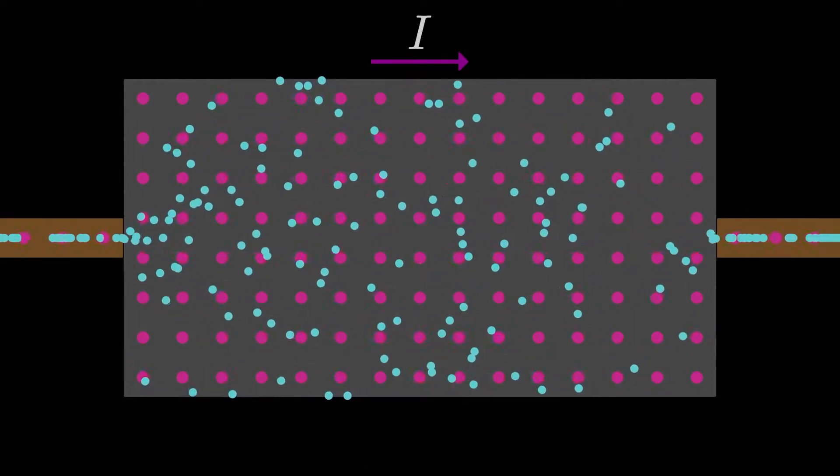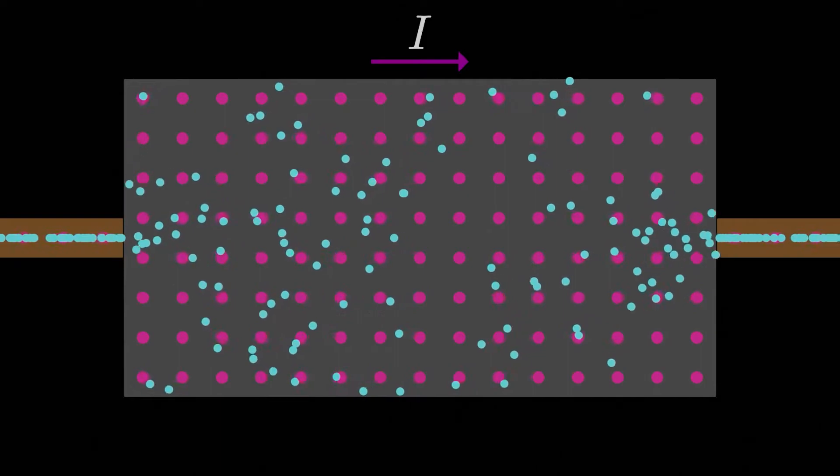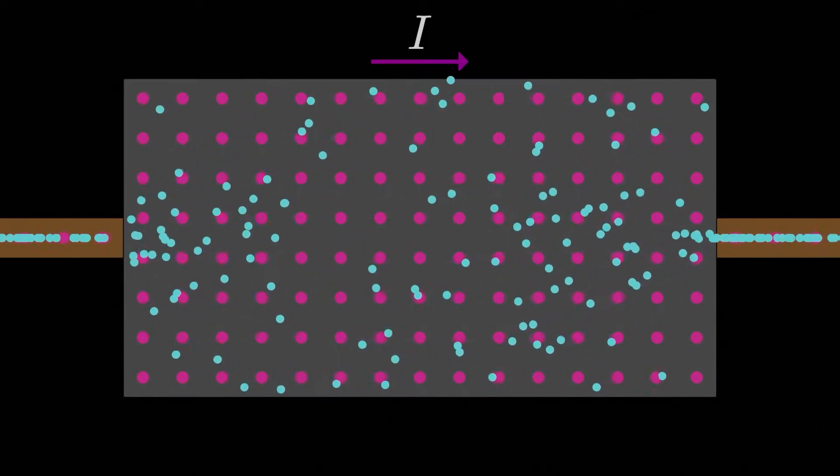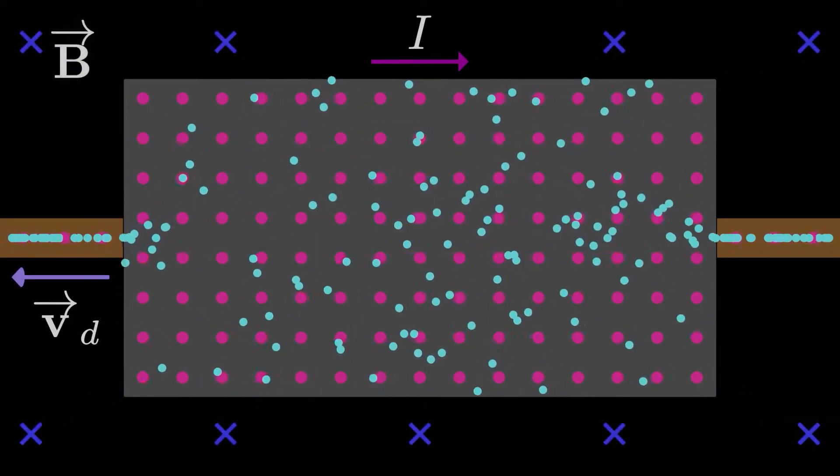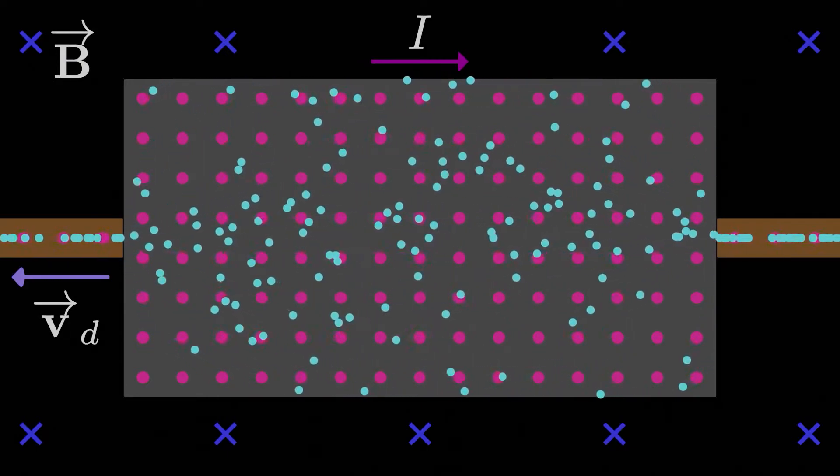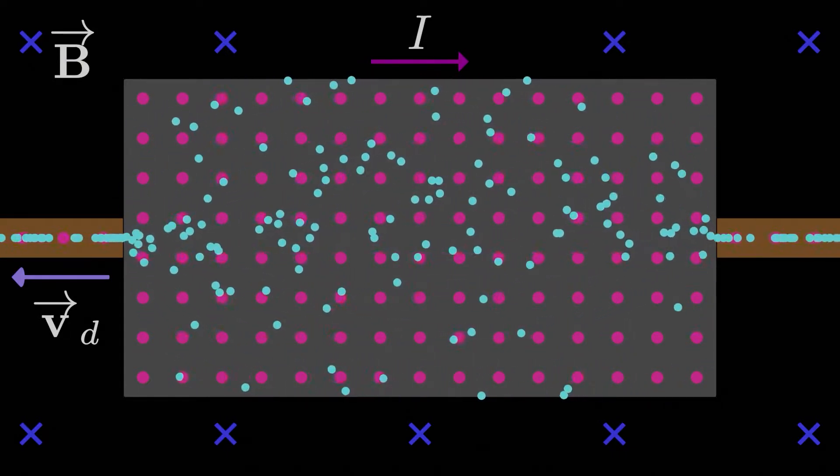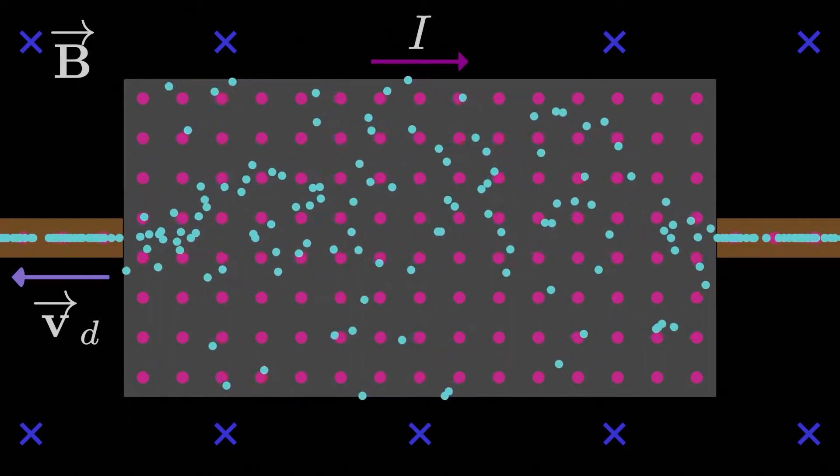So if we have electric current moving to the right, which is equivalent to free electrons moving to the left with some drift velocity V sub D, what kind of force are they going to experience due to an external magnetic field? If the magnetic field is into the screen, the electrons are going to feel a force in which direction?